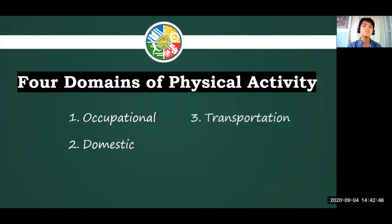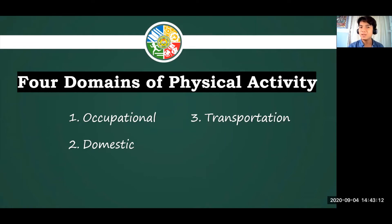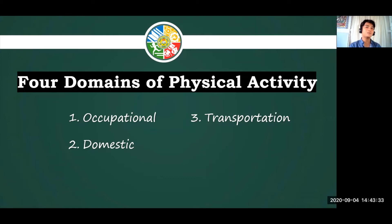The next domain is transportation, which refers to movement involved in going from one place to another. There are lots of means of transportation — it could be walking alone, riding a vehicle, commuting, or riding the bus. For example, if we ride the bus, we also need to climb the stairs — that is one of the physical activities under the transportation domain. The last domain is leisure.